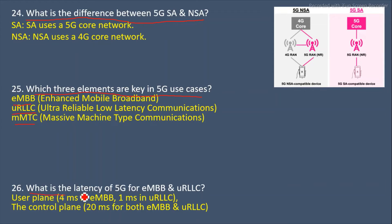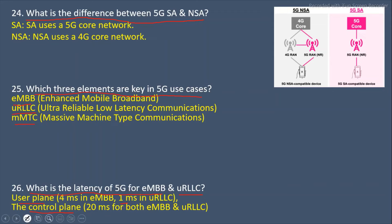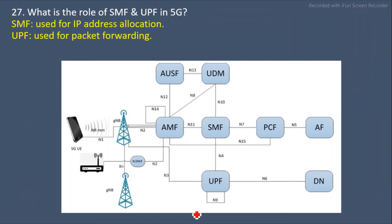Next question: What is the latency of 5G for eMBB and URLLC? In 5G, both user plane and control plane latencies are defined. In the user plane, eMBB gets a latency of 4 milliseconds, and URLLC gets 1 millisecond for both uplink and downlink. In the control plane, both eMBB and URLLC have the same latency of 20 milliseconds.